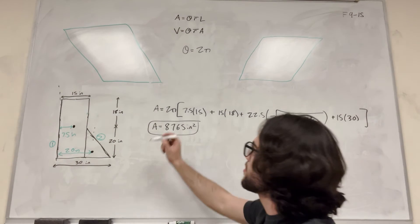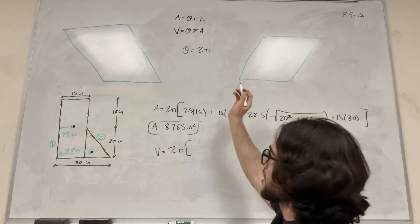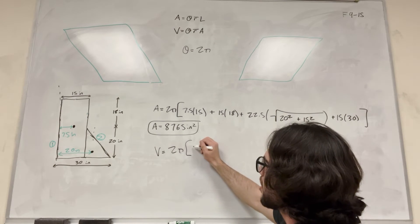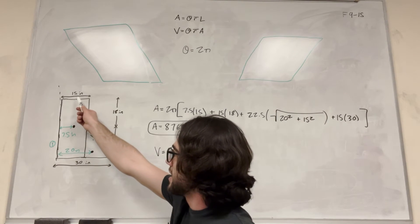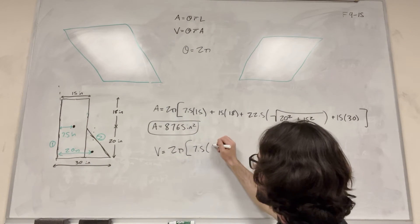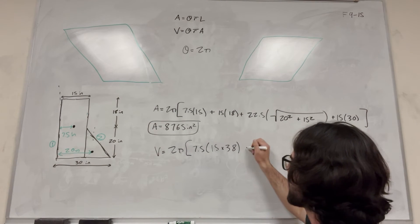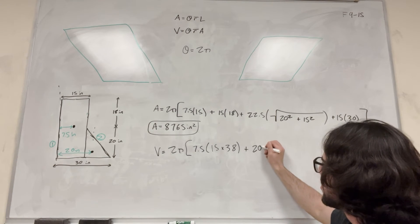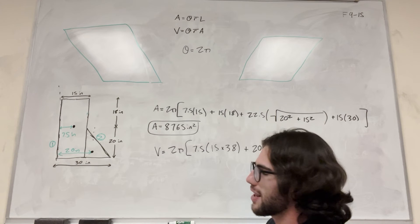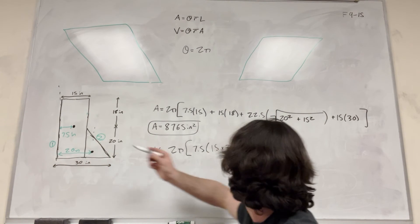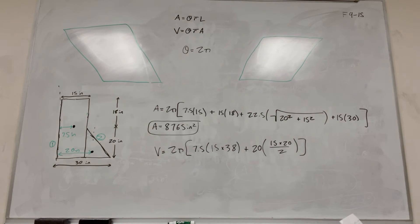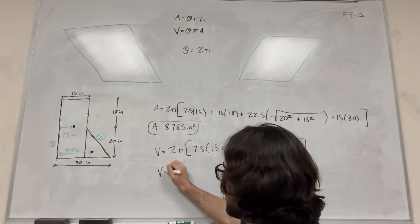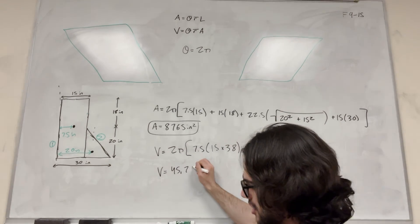Now using the volume formula: volume equals 2π times the sum of r̄ times area for each segment. For segment 1 (the rectangle): r̄ is 7.5 and its area is 15 × 38. For segment 2 (the triangle): r̄ is 20 and its area is (15 × 20) / 2. Plugging everything in, the volume of this 3D rotation is equal to 45,710 inches cubed.